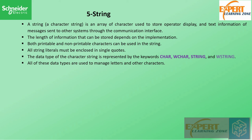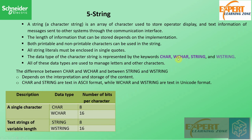The string data types are represented by the keywords CHAR, WCHAR, STRING, and WSTRING. All these data types are used to manage letters and other characters. The difference between CHAR and WCHAR, and STRING and WSTRING, depends on the interpretation and storage of the contents. WCHAR and WSTRING have more bit representation than CHAR and STRING. CHAR and STRING are text in ASCII format, while WCHAR and WSTRING are text in Unicode format.